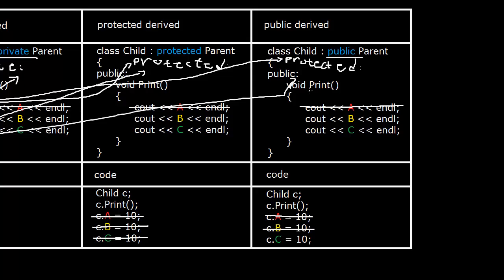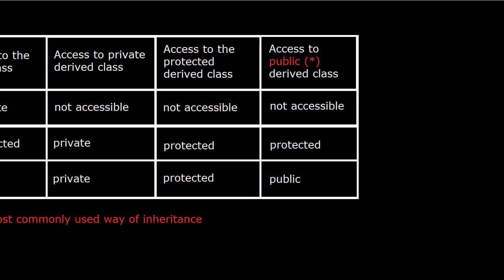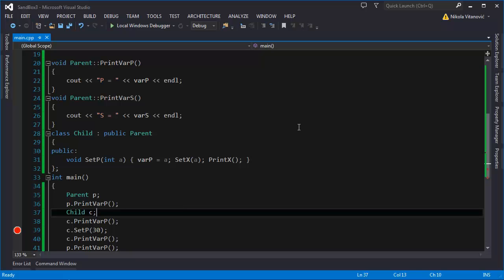We can set 'c' to 10 because it's public. I hope this table will help you a lot with your code — it's very useful to have it on hand in the beginning, but you'll learn it quickly. It's not complicated. If you have any questions, post them in the comments or contact me via message and I'll try to answer them. Thanks again for watching and please subscribe — see you in the next tutorial.